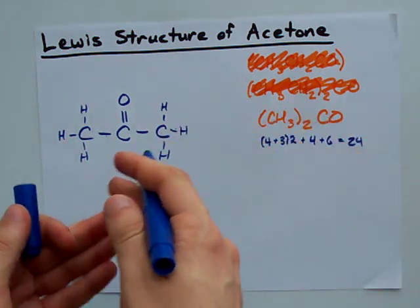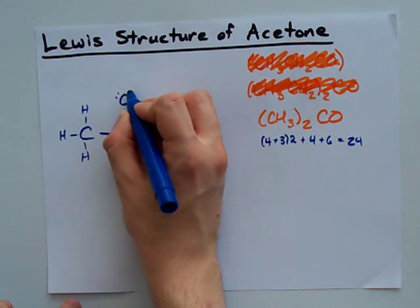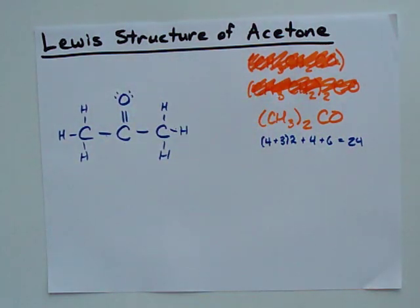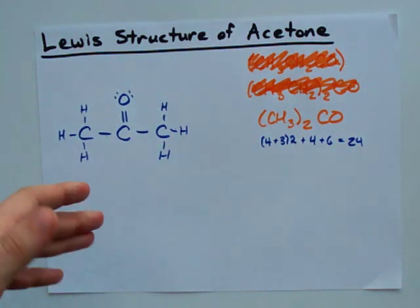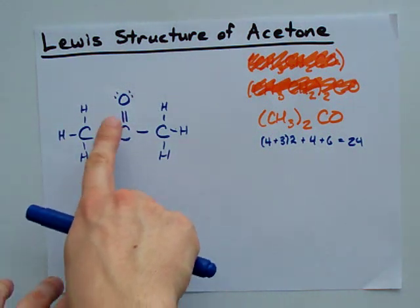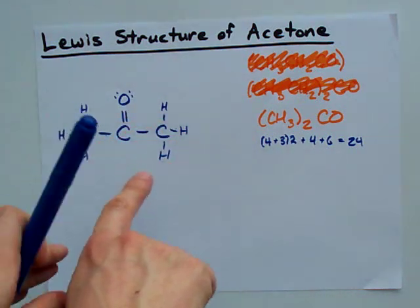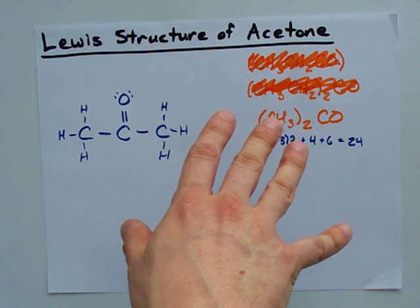And the only atom here that doesn't satisfy the octet rule is the oxygen. I can add my four electrons there, it now satisfies the octet rule, and I have the Lewis structure for acetone. Now there's no resonance here, because I can't get electrons moving around and still have all these atoms satisfy the octet rule.